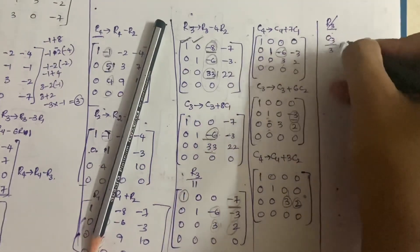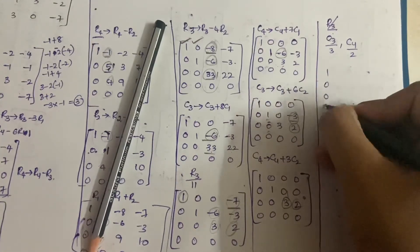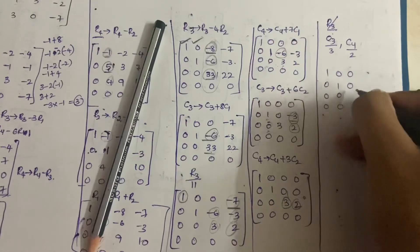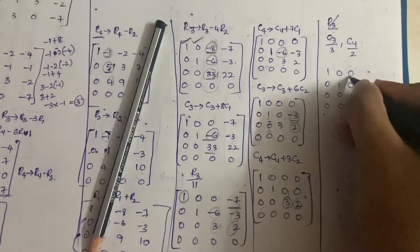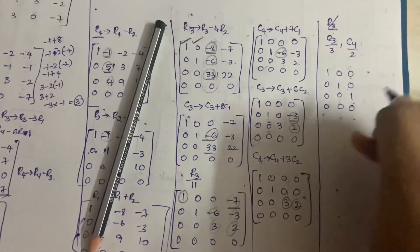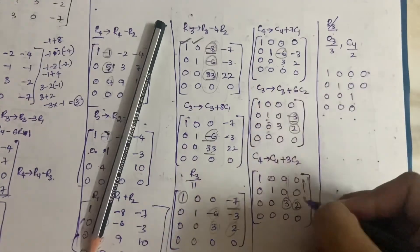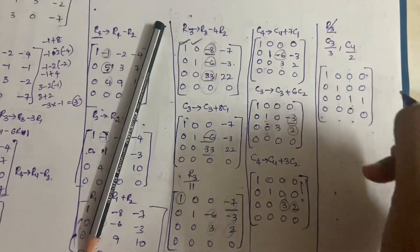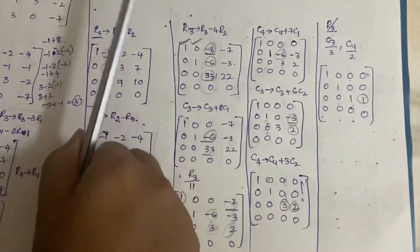Now we do C3 divided by 3 and C4 divided by 2. This gives us: 3 divided by 3 = 1 and 2 divided by 2 = 1 on the diagonal, while all other divided entries become 0. So the diagonal now has ones in all three positions.